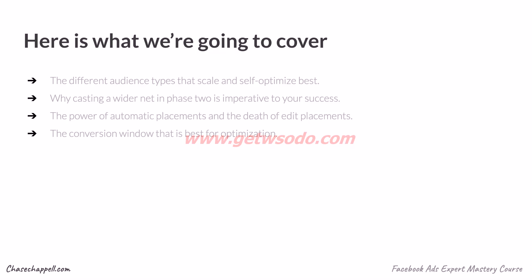Here's what we're going to cover today. We're going to start off with understanding the audience types that scale and self-optimize best, why casting a wider net in phase 2 is imperative to your success. Then we are going to cover the power of automatic placements and the depth of edit placements. We will then go over the conversion window that is best for optimization. This is where the initial structure of your campaigns and ad sets really sets the path for success. It's extremely important that you complete these action items today, put in a lot of effort, and upload them in the action item section within week 2. If you don't get these things right initially, your results will crumble and there won't be any longevity to the audiences or ads you create.